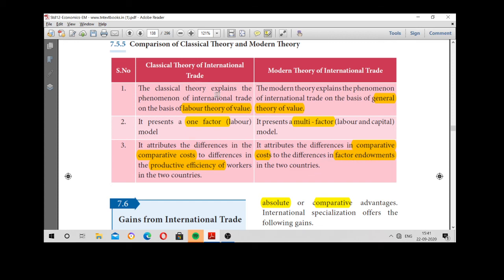So the classical economist view labor theory of value, general theory, one factor, multi-factor. Here it is a productive efficiency of workers and factor endowment in the two countries. Thank you children. Next class, we will see the remaining concept.